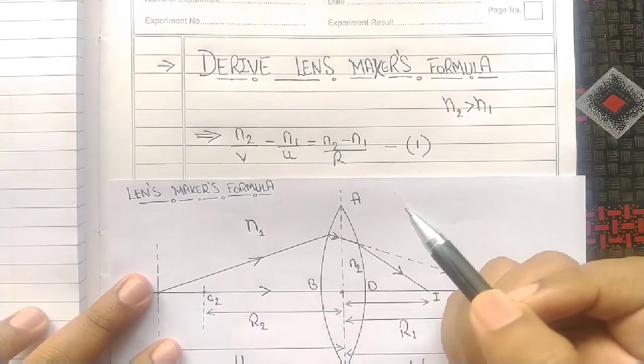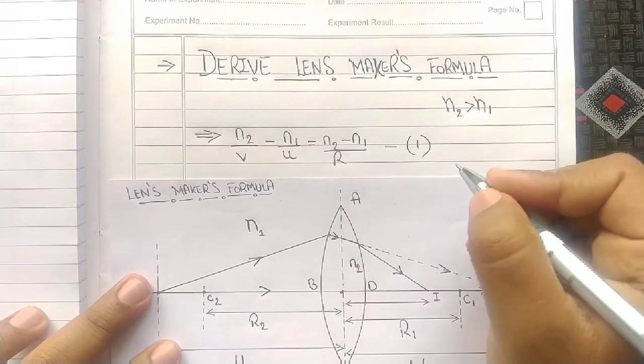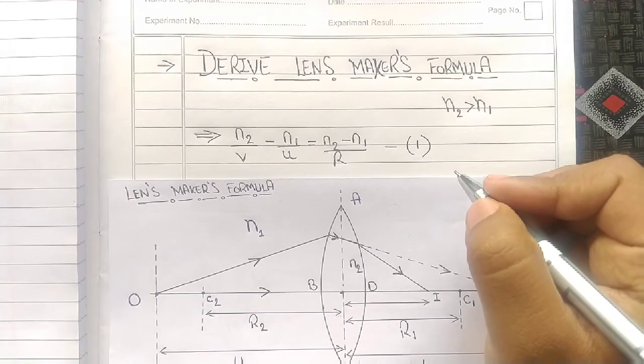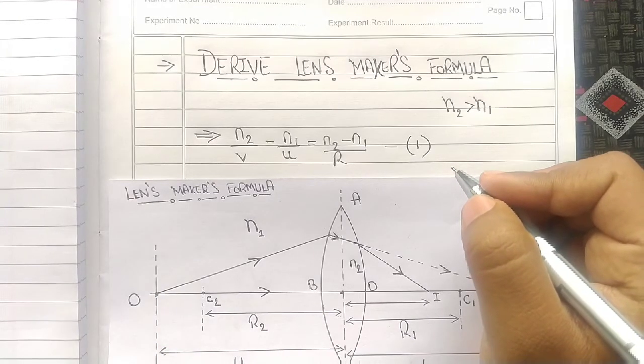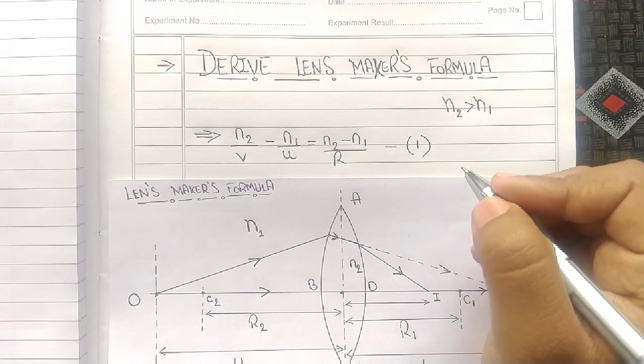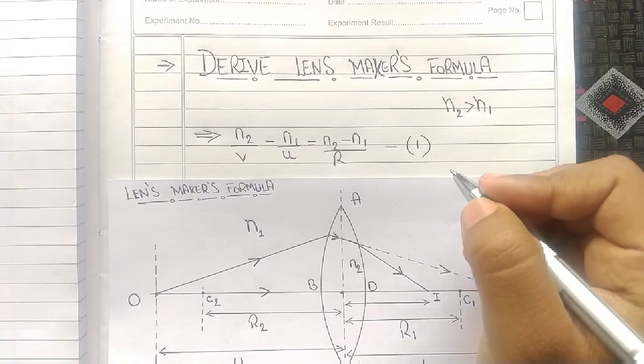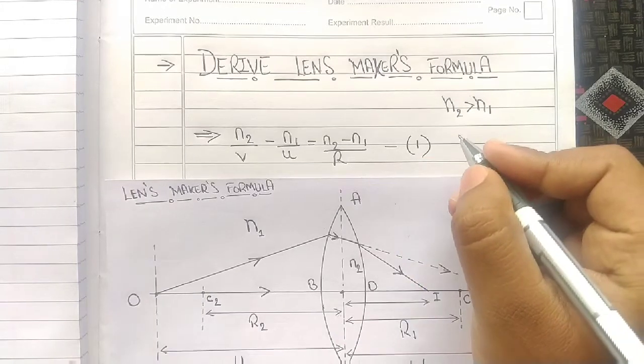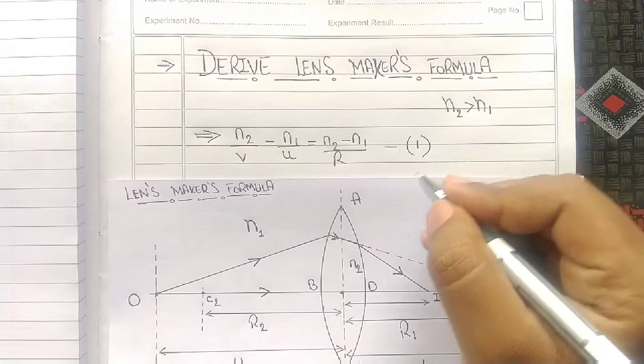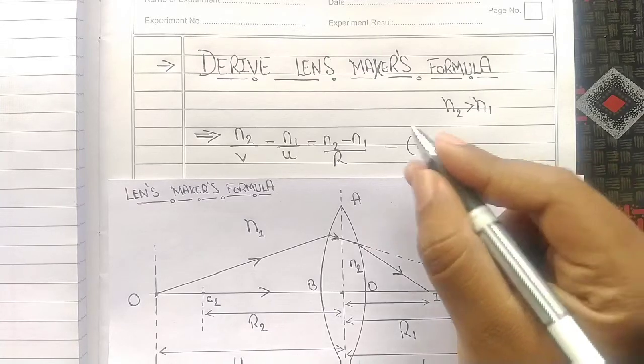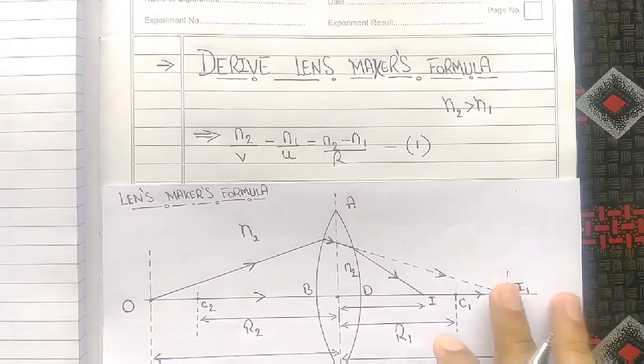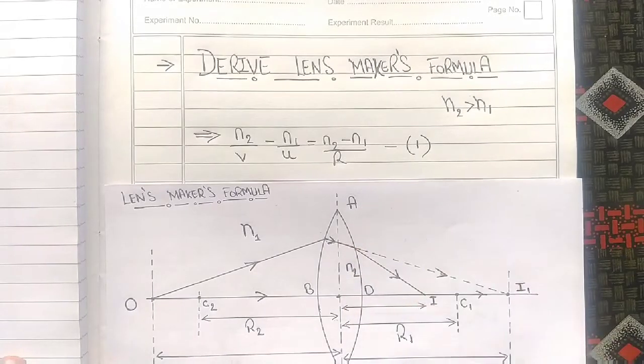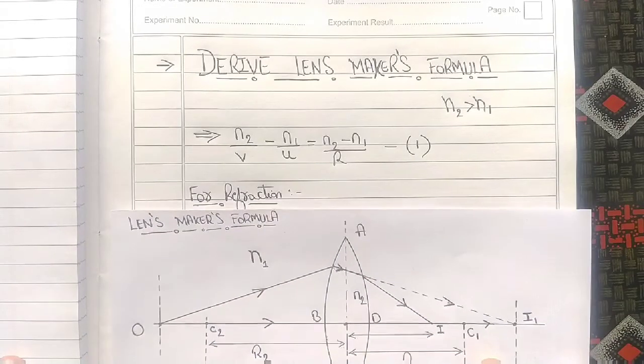We derived this equation relating U, V, N1, N2, and R in our previous video. If you are not aware of this equation, please go check that video. Without this, you can't do the Lens Maker's Formula. You must at least remember this equation.